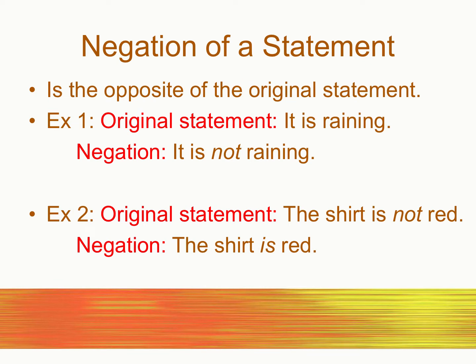The negation of a statement is the opposite of the original statement. Sometimes you're going to have to add in the word 'not' to make it opposite, or sometimes you might take out the word 'not.' For example, 'it is raining' — the opposite is 'it is not raining.' And if it already has 'not' in it, like 'the shirt is not red,' you take out the word 'not' and say 'the shirt is red.' In some cases you may have to change the grammar to make it sound grammatically correct, but you're just trying to make it the opposite of what the statement says.